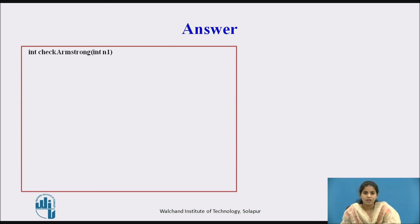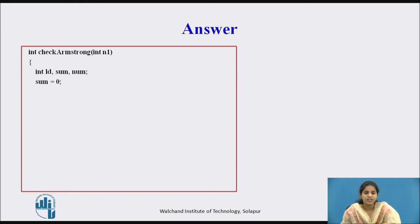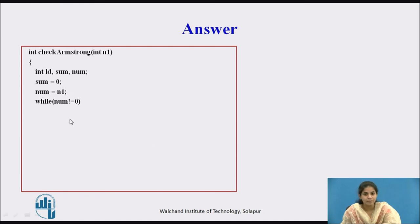We write the check_armstrong function. The return type is integer, the function name is check_armstrong, and it takes one parameter of integer type. We declare variables: ld for last digit, sum for storing the sum, and num. We initialize sum to 0 and num to the original number n1.